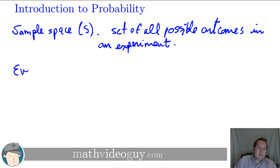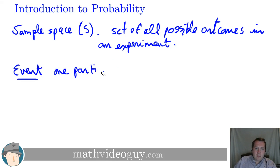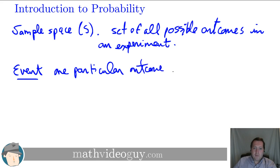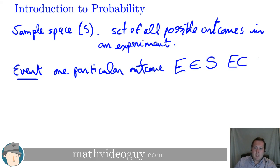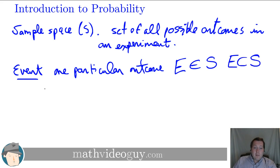You can also define something called an event — one particular outcome. An event E is an element of S, or more precisely a subset of S. So our sample space S defines all the things we could possibly be looking at, and events are what could actually take place.